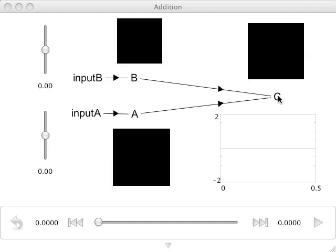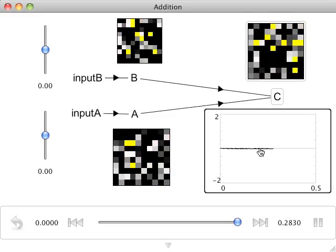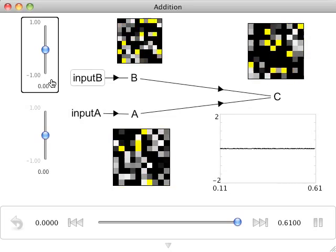The decoded value of the activity in C is shown in this value graph. When I hit play, we can see that the value in C is equal to 0, which it should be if it is in fact summing the values in A and B, both of which are 0.